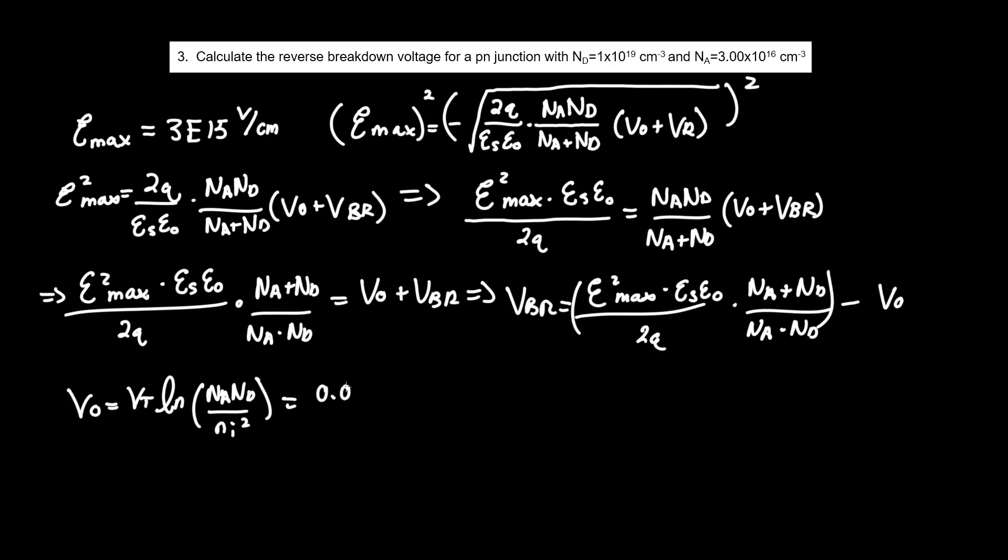Which ends up equals 0.0259V, the constant that you've seen a lot, times LN of NA, which was given to be 3 times 10 to the 16th per centimeter cubed, times ND, 1 times 10 to the 19th per centimeter cubed, all over the constant 10 to the 10th, remember to square it, per centimeter cubed, which would be centimeter negative 6. All of these terms will cancel out. And plugging this into the calculator, we get 0.923 volts.